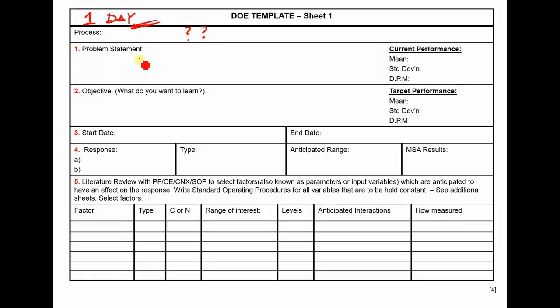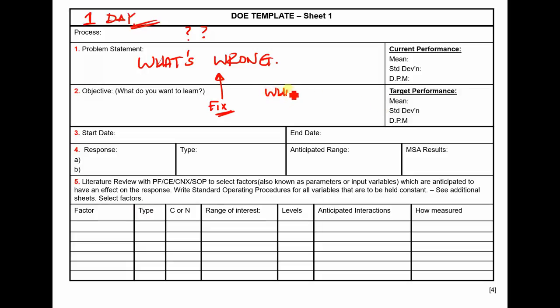The first questions are straightforward: What's your process? What's your problem? What's wrong? Then: What's your objective? Your real objective might be 'fix that,' but you are doing a test and you have the opportunity to find out incredible amounts of information from one test if you design it correctly. So the question is: what do you want to learn?